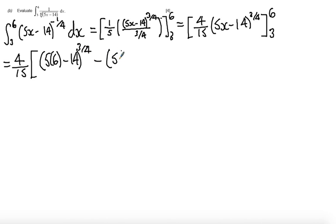Evaluated between 3 and 6. At this point you can type this into your calculator and evaluate this in one go. And hopefully if you evaluate this correctly, you should get the answer 28 over 15. And that should be that.